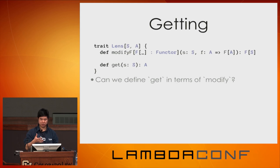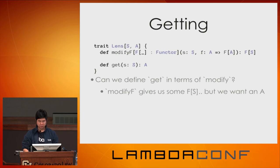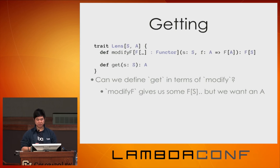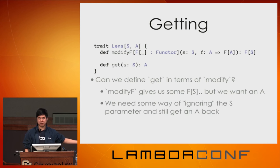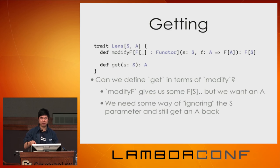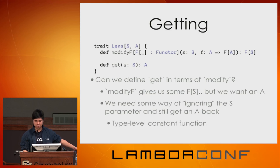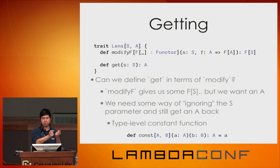We need some way of ignoring the S parameter to F and getting an A back. Thinking of F as a type-level function, regardless of what S we put in we always want a particular A back — which sounds like the constant function. Const says: give me some A, and I'll give you a function from B to A — regardless of what B you give me, I give you an A back. The type-level Const has two type parameters: Z (the thing you care about) and A (the thing that's ignored). To implement Functor for Const, we fix Z to a particular value and leave A free. Then map: given Const[Z, A] and a function A to B, we want Const[Z, B]. Simplifying, we have a Z and a function A to B and want a Z — so we just ignore the function and return Z.